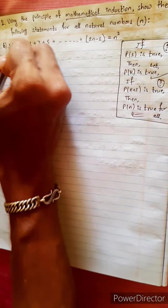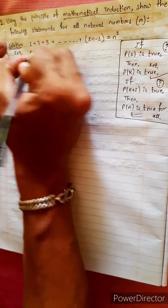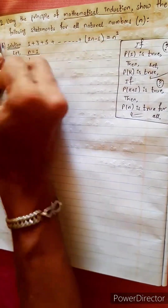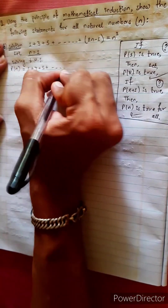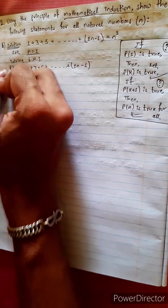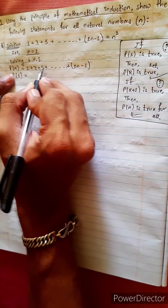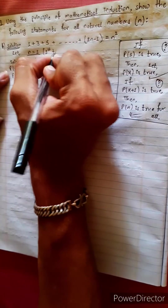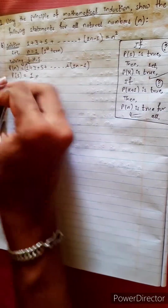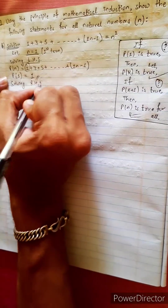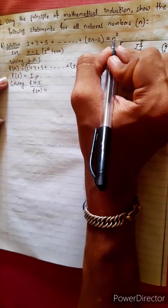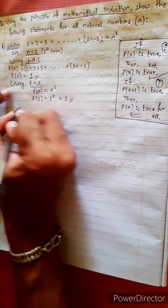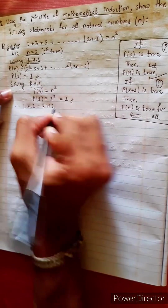In the beginning, P1 is true. Let n equal 1. Solving LHS: Pn equals 1 plus 3 plus 5 plus (2n minus 1). P1 equals 1. Solving RHS, we have Pn equals n squared, so P1 equals 1 squared equals 1. Therefore LHS equals RHS.